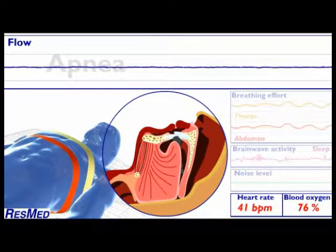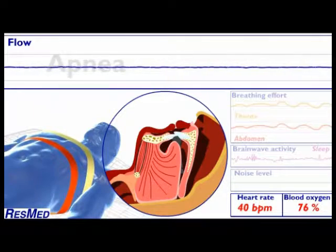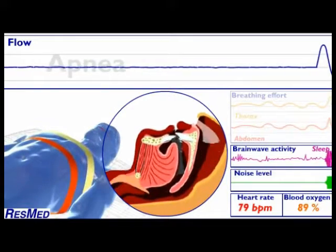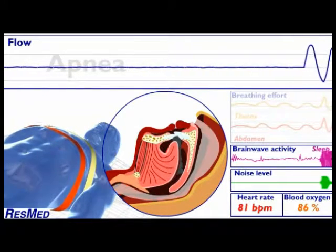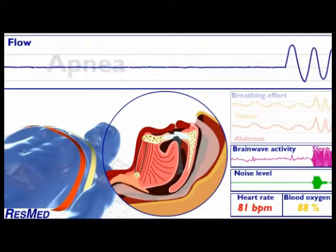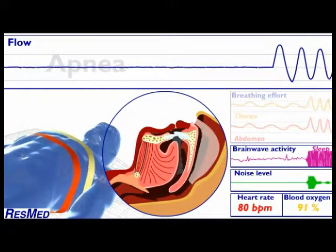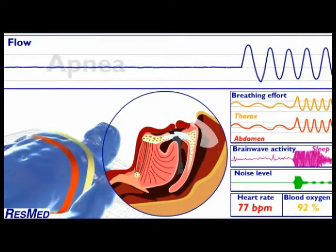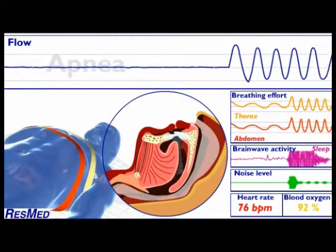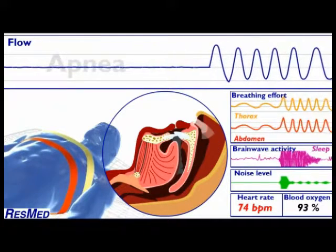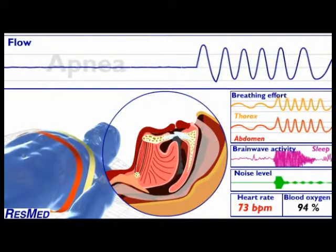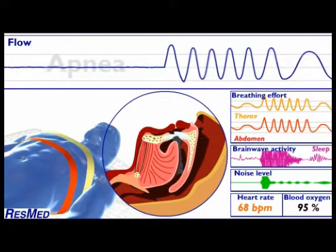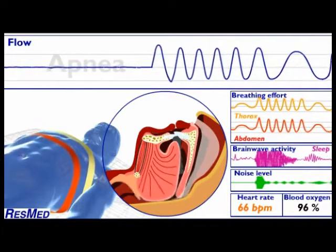Our model gasps for air, causing a sudden move. Brain activity increases significantly. The heart rate after arousal is almost double what it was during the apnea. Our model's rapid breathing increases the airflow, and the blood oxygen level begins to rise again. The tongue and soft palate quickly return to their normal position as the airway opens fully. The airflow curve returns to the normal bell shape.